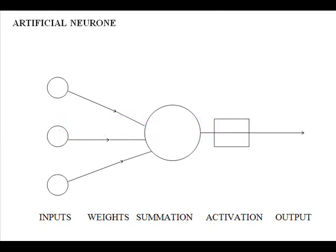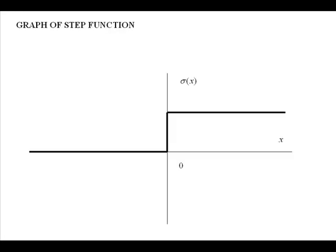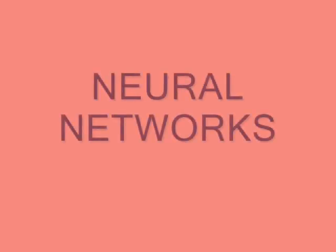One form for the activation function is the step function, as shown here. Such artificial neurons can be connected together to form neural networks.